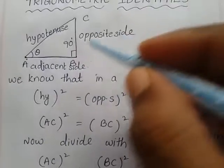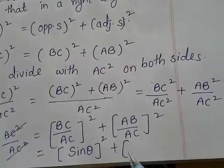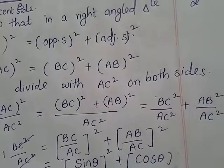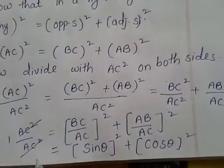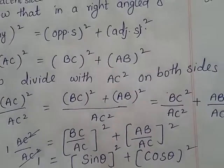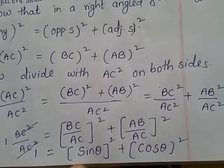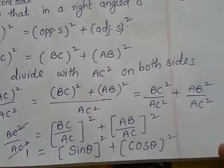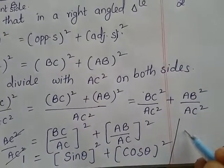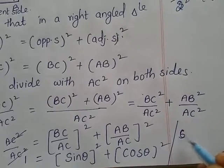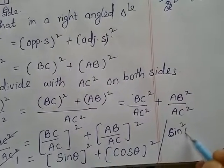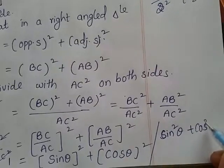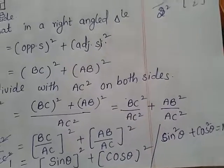AB by AC is nothing but cos theta. So we are getting the identity: sine square theta plus cos square theta is equal to 1. This is the conclusion — sine square theta plus cos square theta is equal to 1.